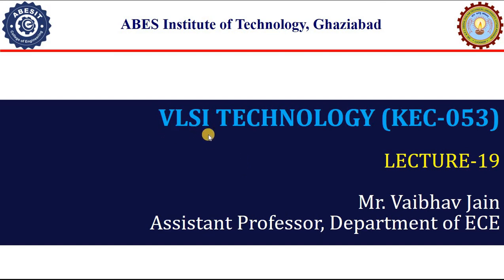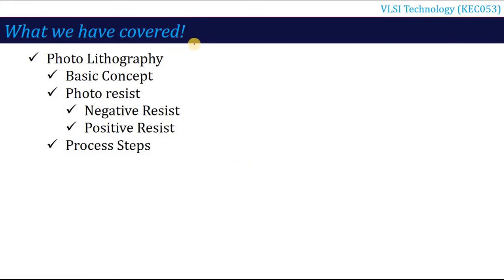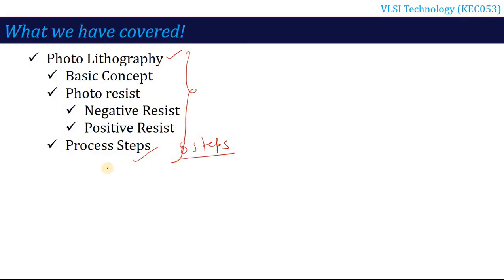Hello all, welcome to the video lecture series of VLSI Technology. Subject code is KEC053 and here we are in lecture number 19. In the previous lecture, we were talking about photolithography — what is the basic concept and why do we use it. We need to remove some particular portion of the oxide layer developed during oxidation, and that is the process of photolithography. It has 8 steps, starting from cleaning up to photoresist stripping, which we covered in the last two lectures.